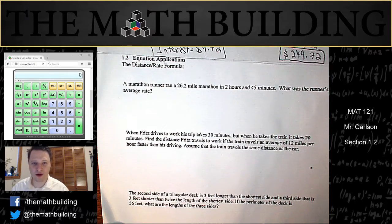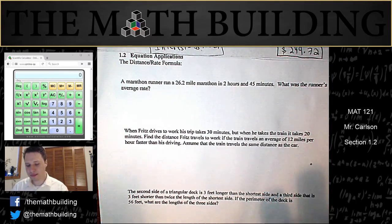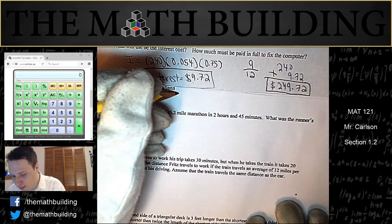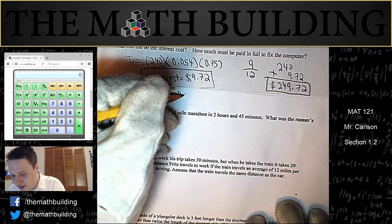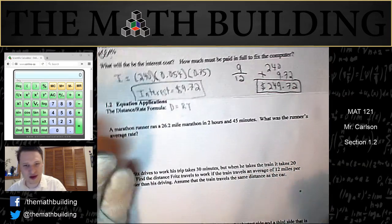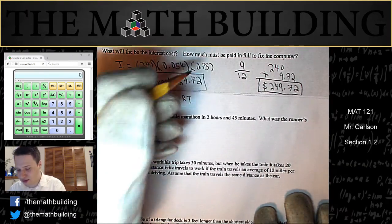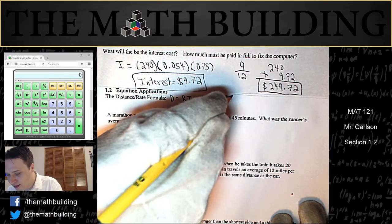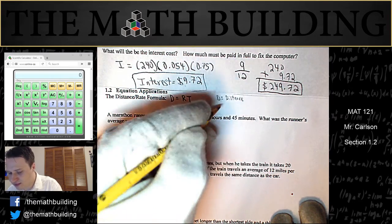Another formula you should memorize is the distance-rate formula, and the way I remember it is I remember the word dirt, because the formula is distance is equal to rate times time, which kind of looks like the word dirt. So distance equals rate times time, and it's really important to understand that your units for this have to be consistent.